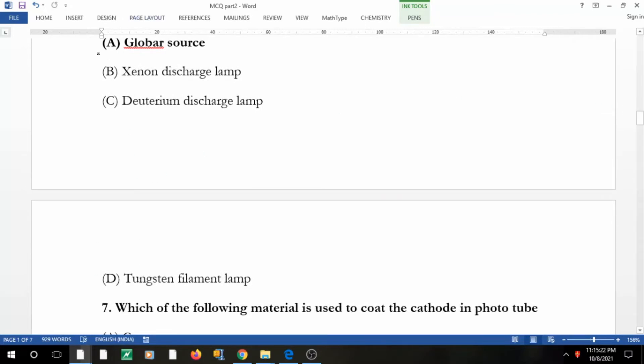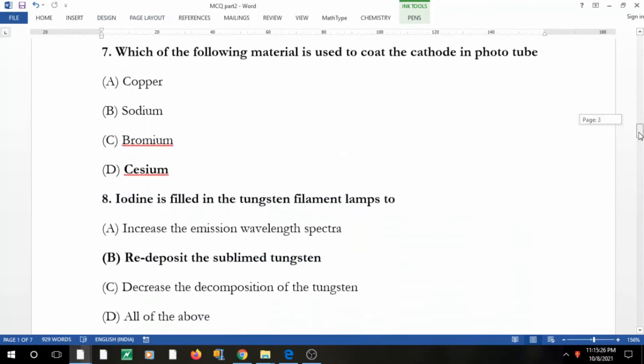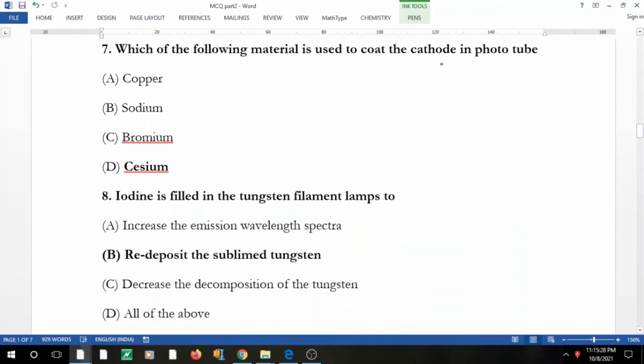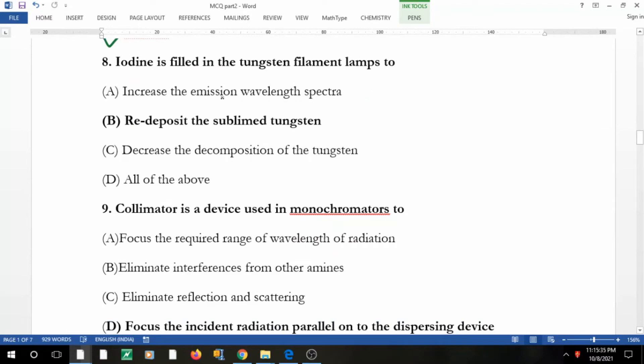Coming to the next: all of the following are useful as a source of UV-visible except global source, because xenon discharge lamp, deuterium discharge lamp, and tungsten filament lamp are used, while global source is used in IR spectroscopy range. Which material is used to coat the cathode in phototube? That's cesium. Iodine is filled in the tungsten filament lamp to re-deposit the sublime tungsten.